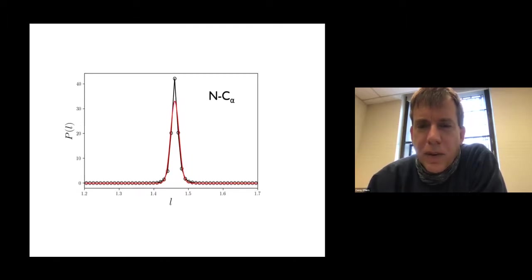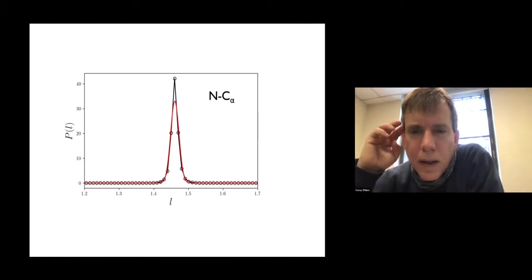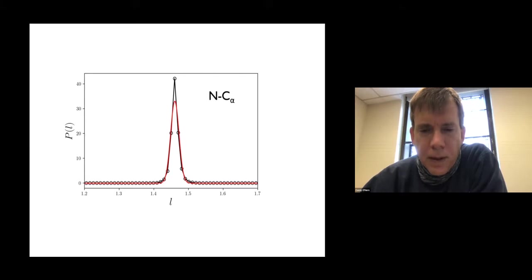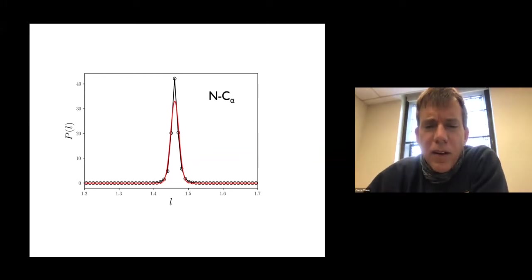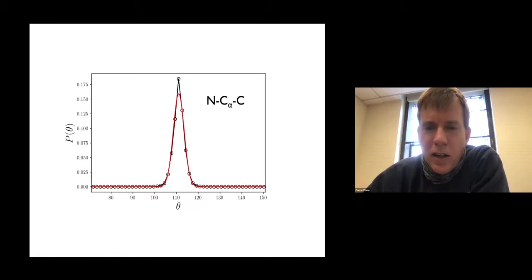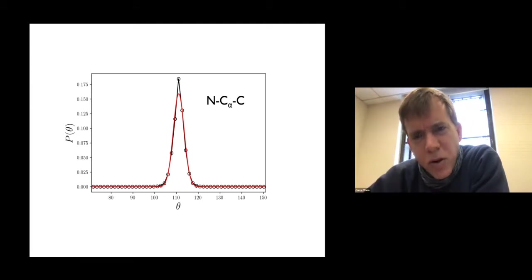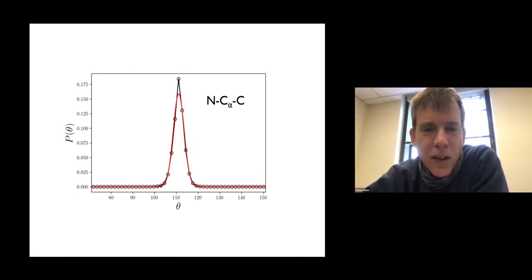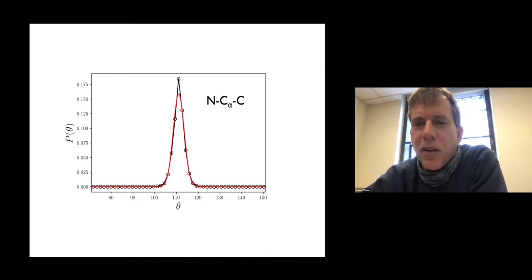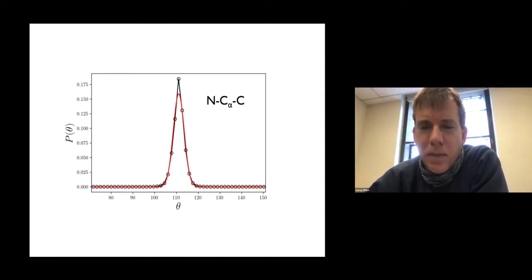Here's an example of a bond length between a nitrogen and a C-alpha. The standard deviation for the lengths is around a tenth of an angstrom, and for the angles it's plus or minus five degrees. This emphasizes that there are degrees of freedom in proteins that are fairly well fixed, determined by the nature of bonded atoms. Then there are other degrees of freedom that aren't as fixed — they fluctuate from one amino acid to another and from one protein structure to another, and those are the interesting ones to predict.